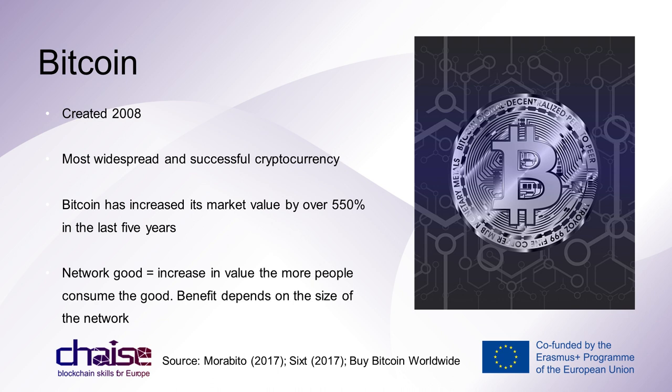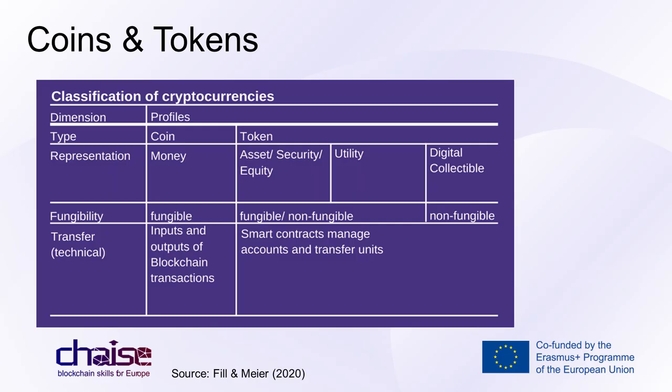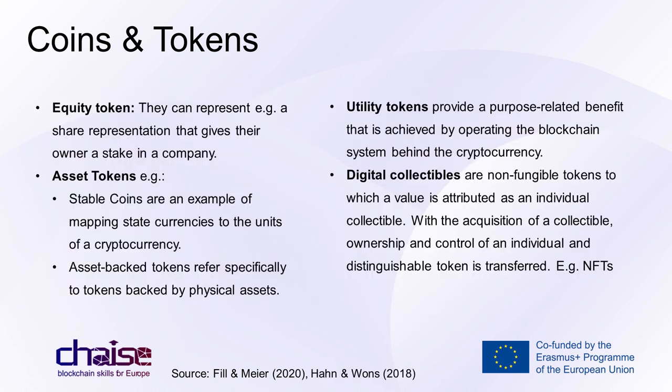It is important to differentiate between coins and tokens. Coins are quantifiable units of a virtual currency to represent money, e.g. Bitcoin. The interchangeability of equivalent units — fungibility — is given, as individual units can be replaced in the same way as coins or notes. Tokens are quantifiable units that represent the identity of any virtual or physical object. Fungibility is always given when individual units can be replaced by others of equal value. Non-fungible tokens are those whose value representation is linked to the individuality of a unit, e.g. registered shares.